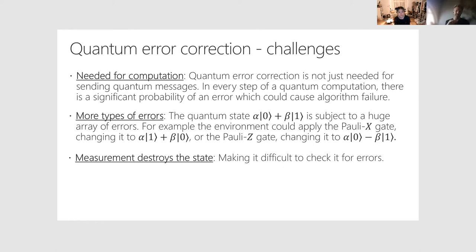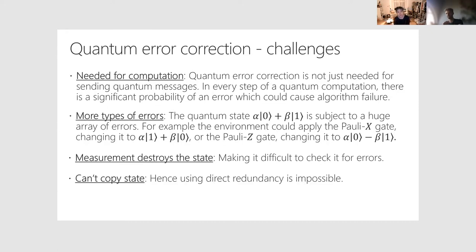Another problem is that measuring the system destroys the state, making it hard to imagine how we can check and fix errors as we go — because in quantum mechanics, when we make measurements, we collapse the state. And something even more fundamental: if you have an arbitrary quantum state, you can actually prove using the rules of quantum mechanics that you can't copy it. So we can't do what we did before and replace a zero with 000, because if we have some arbitrary quantum state like alpha|0⟩ + beta|1⟩, we can't just copy that. It's impossible.